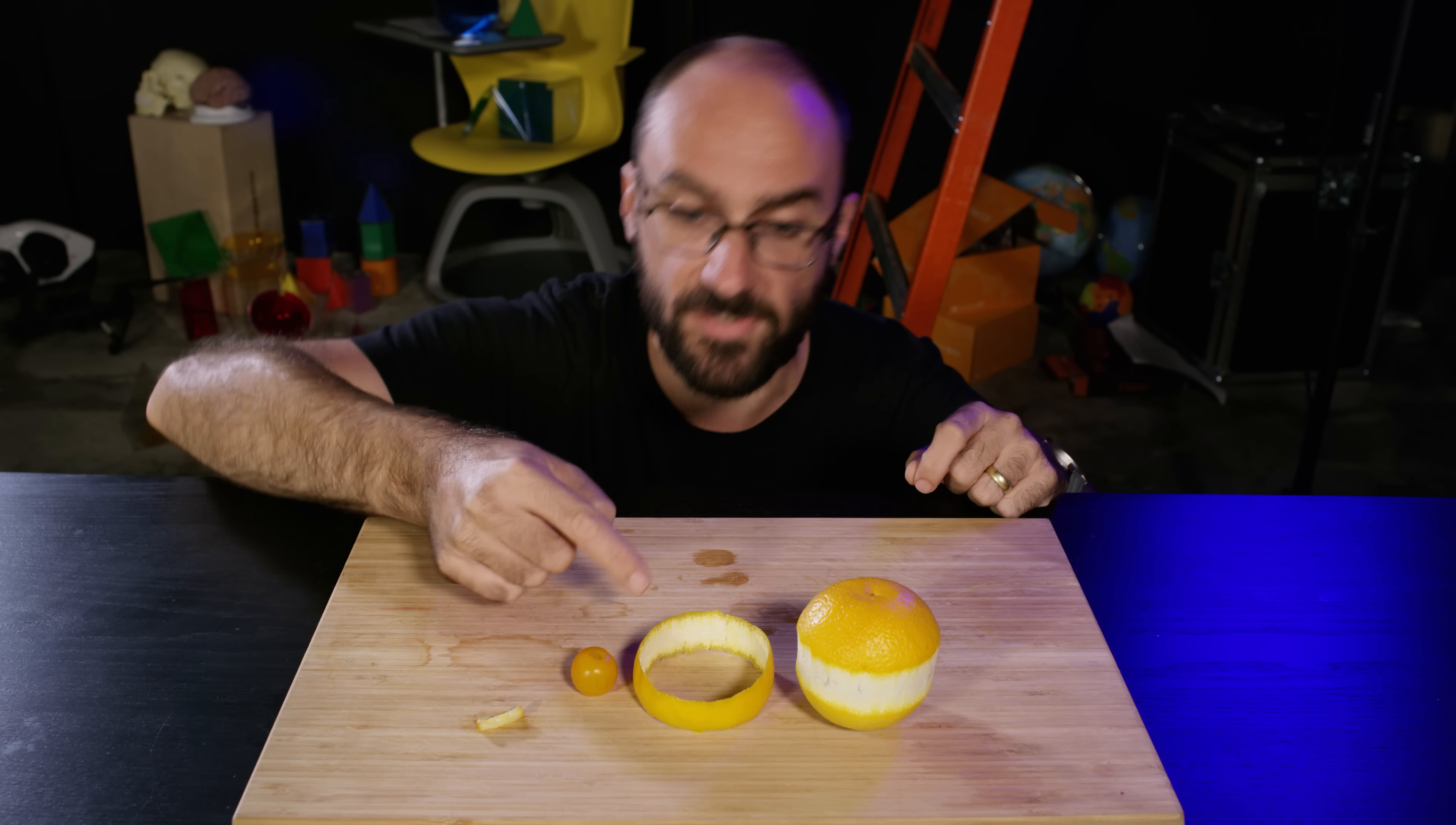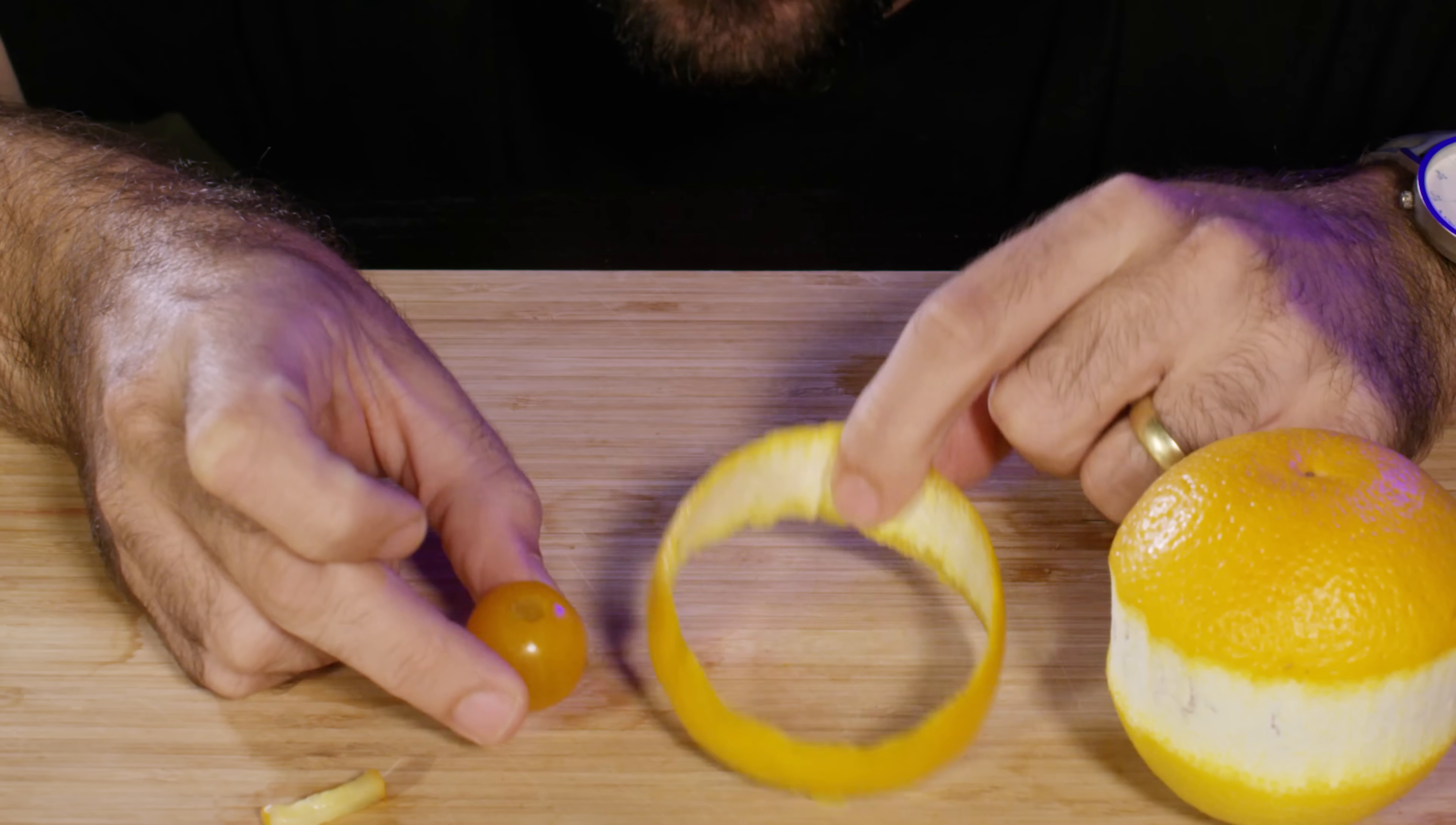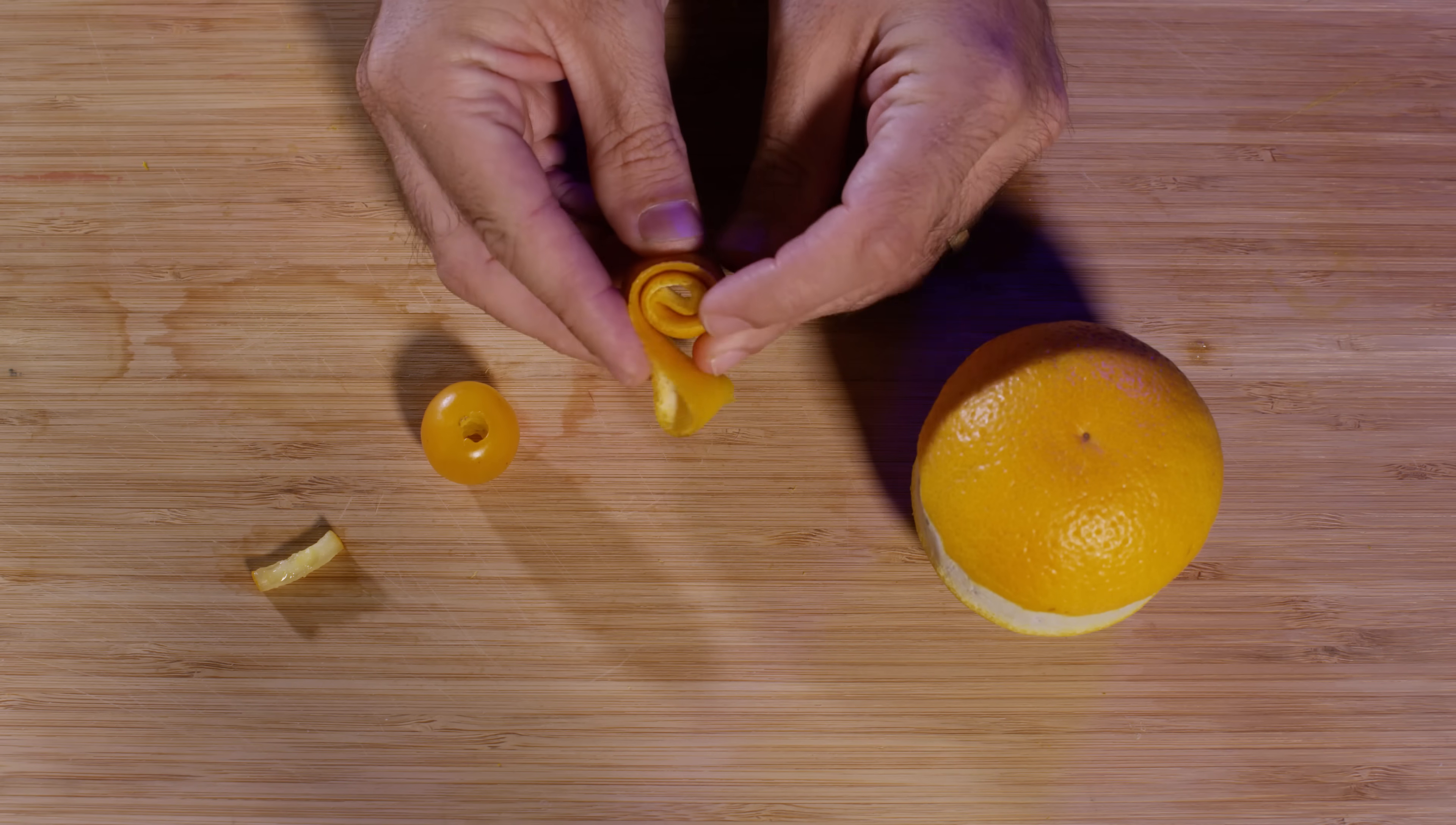The tomato has a smaller circumference than the orange, which means less volume, but its ring is thicker, which means more volume. Both of those effects exactly cancel out, so these two napkin rings have identical volumes. They take up the same amount of space.